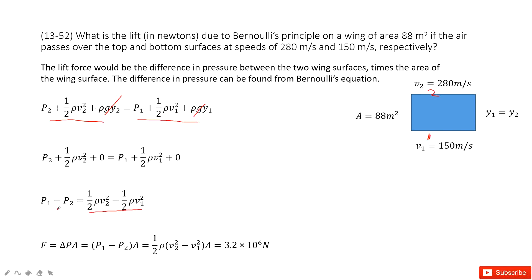This is the difference in pressure. The difference in pressure times the cross-sectional area equals the lift force. We substitute delta p into the lift force equation and input the known quantities to get the final answer. Thank you.